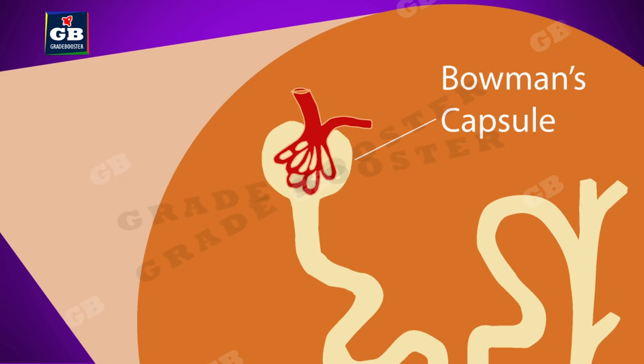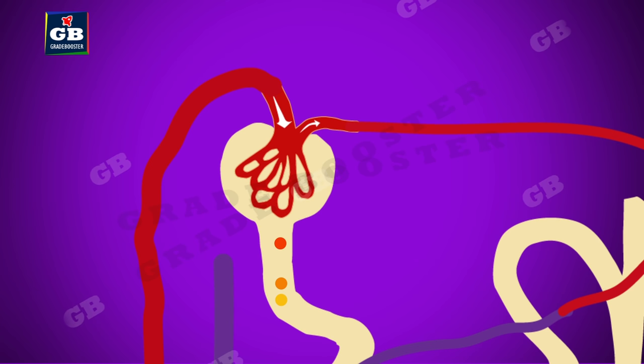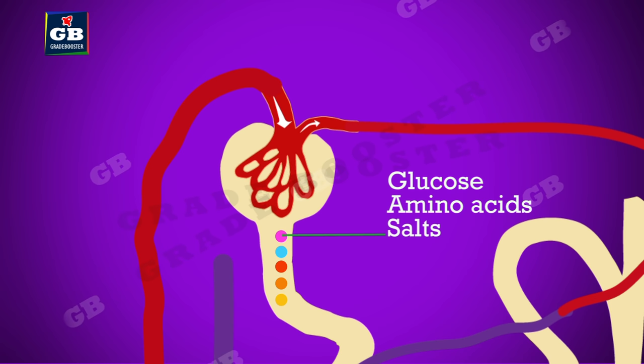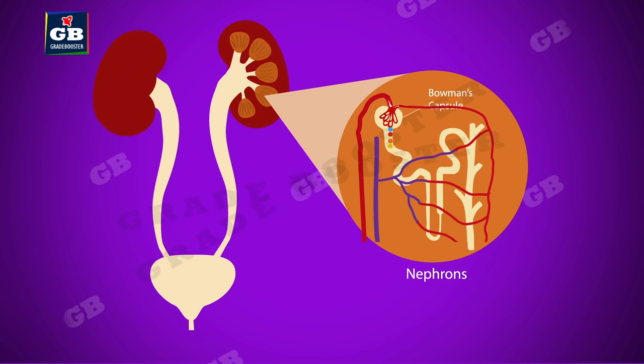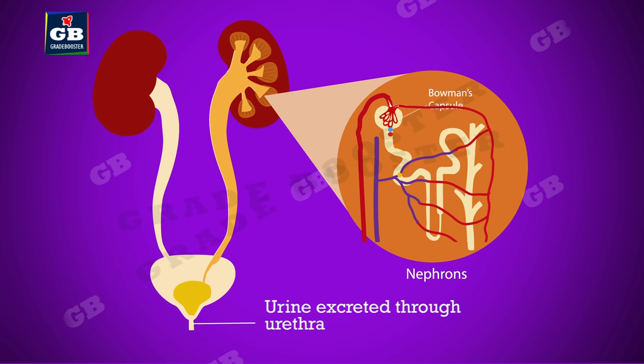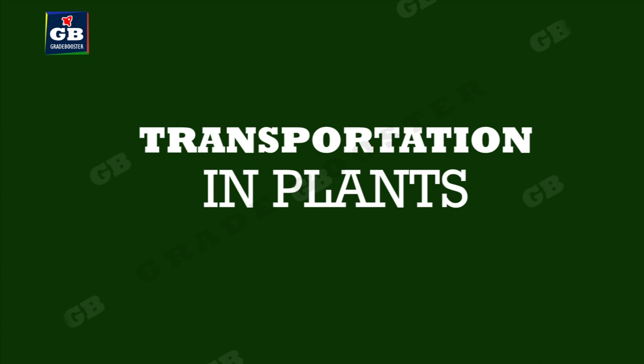Each nephron consists of a cluster of capillaries and a tube with a cup-shaped end called Bowman's capsule. Blood is filtered in this capsule and toxic wastes like urea, uric acid, and creatinine along with water are separated. Certain useful materials like glucose, amino acids, and salts are also filtered but reabsorbed back into the bloodstream. The water with toxic waste molecules collected in the kidney is called urine. It is sent to the urinary bladder through the ureter, and once the bladder is full it creates an urge to urinate; when we relax the bladder muscles, urine passes out through the urethra.